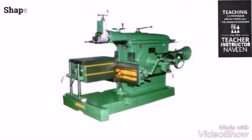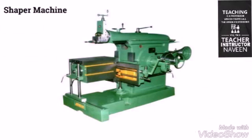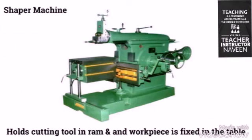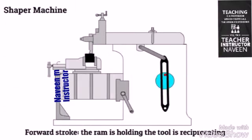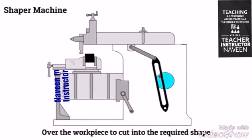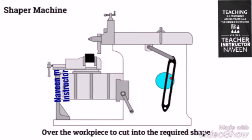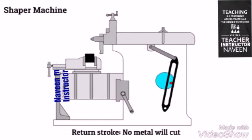The Shaper Machine is a reciprocating type of machine, basically used for producing the horizontal, vertical, or flat surfaces. The Shaper holds the cutting tool in RAM and the workpiece is fixed in the table. During the forward stroke, the RAM holding the tool is reciprocating over the workpiece to cut into the required shape. During the return stroke, no metal will be cut.